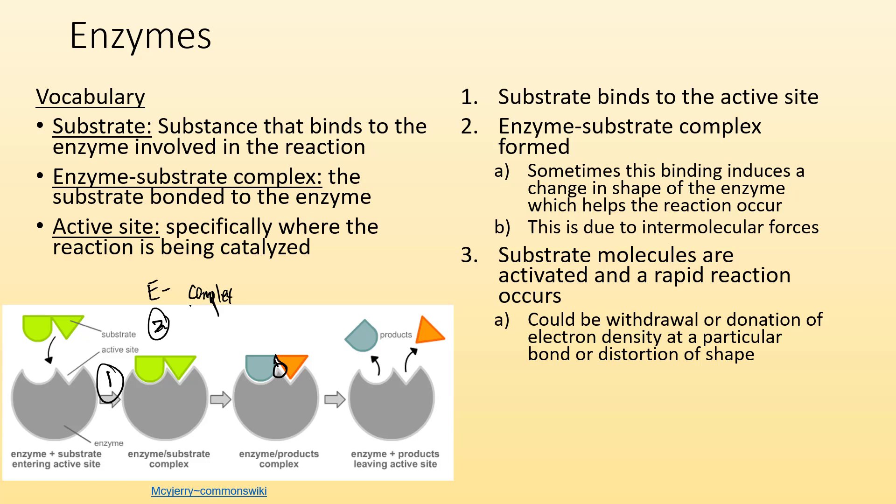This could be the withdrawal or donation of some electron density at a particular bond or distortion of the shape. So this enzyme is doing something that's weakening this bond right there. And then the last step is the reaction occurs and the products leave the active site and the enzyme is free to repeat the process over and over. The enzyme helped that process happen, but it didn't get used up.